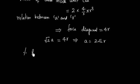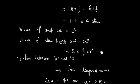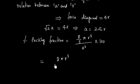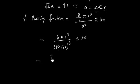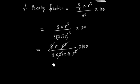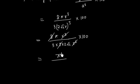Now let us find the percentage packing fraction. That is volume of atoms divided by total volume, multiplied by 100. Volume of atoms is (16/3)πr³. Total volume is A³ where A = 2√2·r. Substituting, we get 16πr³ divided by 3·(2√2)³·r³, which simplifies to π divided by 6√2.